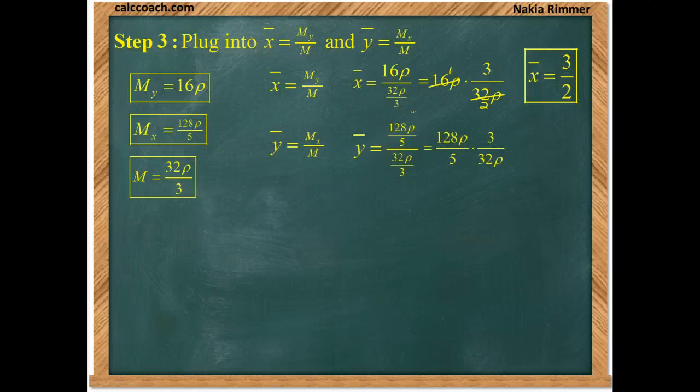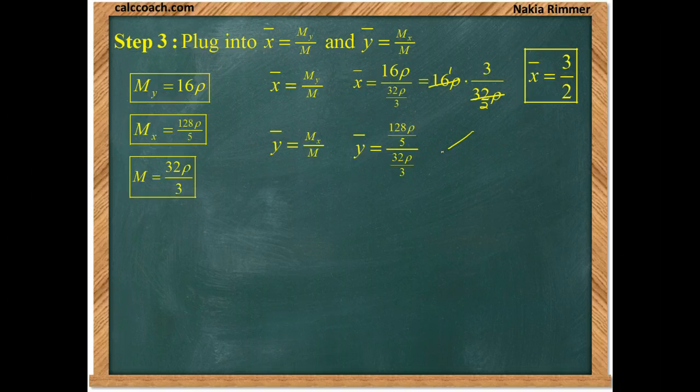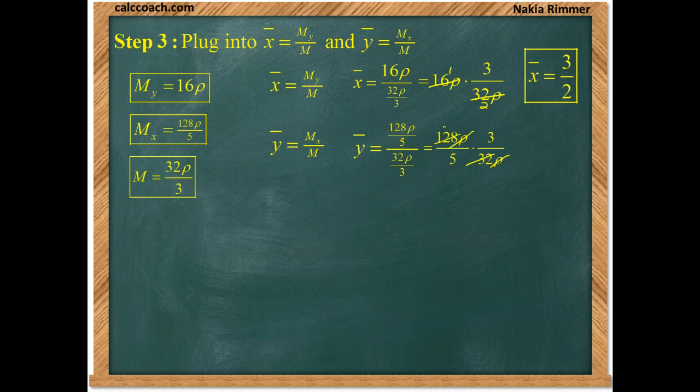And 32 goes into 128 four times, leaving you with the 4 and the 3 in the numerator, which is 12, when multiplied.